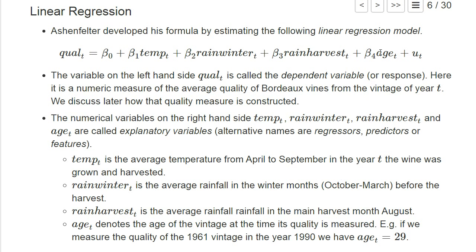He also has another variable, age, which denotes the age of the vintage at the time its quality is measured—the time at which the auctions take place for which we have collected data to analyze the average price. For example, if we look at auctions in 1990 for the vintage from 1961, the age variable would be 29.